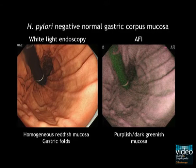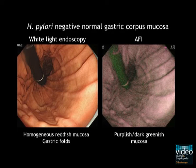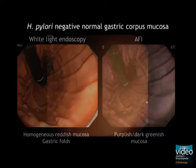Endoscopic findings of H. pylori-negative normal gastric mucosa are now explained. In white light image, H. pylori-negative mucosa looks homogeneously reddish and gastric folds are well preserved. In AFI, it looks purplish or dark greenish in colour.